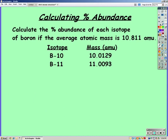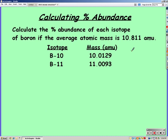So we're going to be calculating the percent abundance. In the previous one, they gave us the mass and the percent, and we were calculating the average atomic mass.